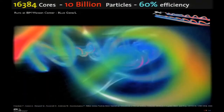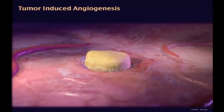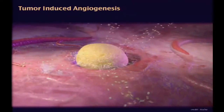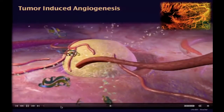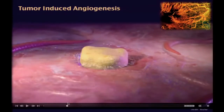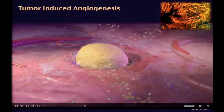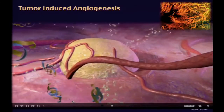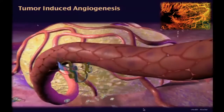We are interested in taking ideas and technology from this field and applying them to other areas. One important area is cancer. When cancer tumors start to grow, cells at the interior of the tumor become hypoxic — they don't receive oxygen — and hypoxic tissues start to emit growth factors, similar to growth factors emitted when you cut yourself and want blood vessels to grow back, bring oxygen, and repair tissue. These growth factors go to blood vessels and tell them to grow and transport oxygen.